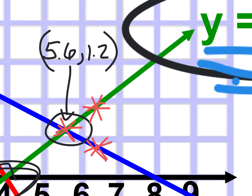That changed the intersection point a tiny bit. I got 4.8 comma 1.58, which I'm going to round to 1.6. Do you get how yours might be off from mine just a little bit, and that's okay?